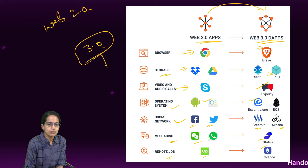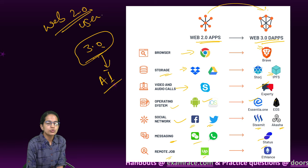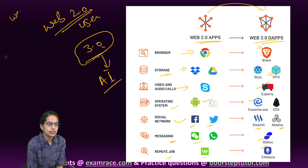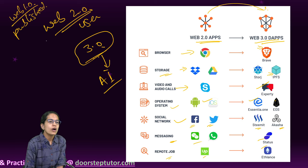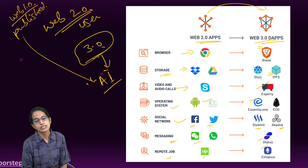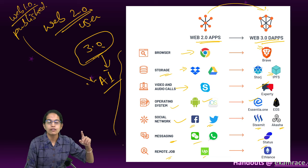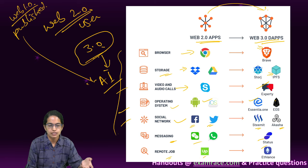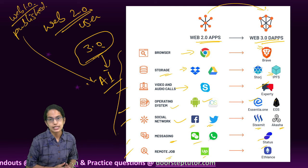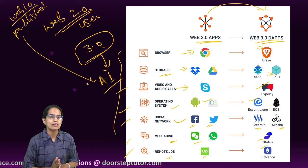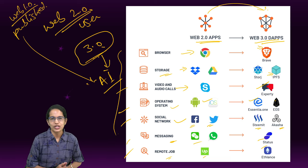To summarize: Web 3.0 is near-human intelligence and AI-driven; Web 2.0 is user-generated content; and Web 1.0 is mainly published content. We have understood how the development has taken place over the years — not just in internet, but also in browsers, storage, video calls, operating systems, social networking, messaging, and remote jobs. This is a very important topic for upcoming NET examinations. Stay tuned for more updates and good luck for your upcoming examination.